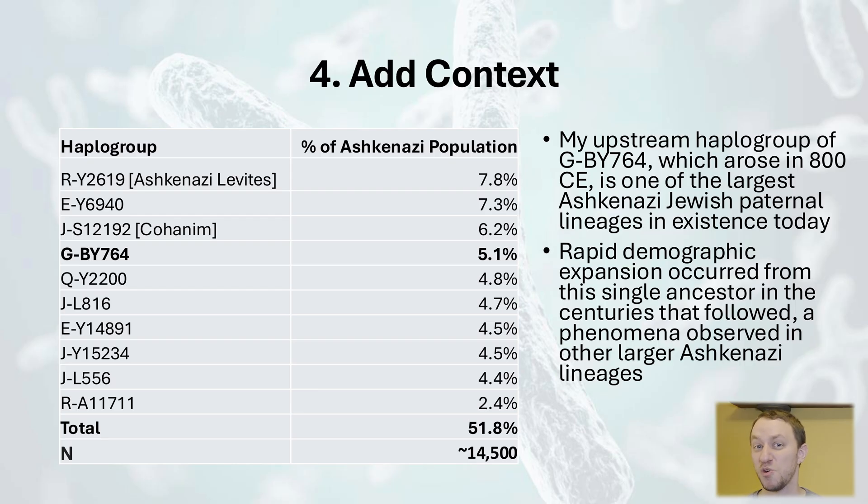We covered a lot of ground in this video. Hopefully you now have a better idea of how to navigate your own Big Y tree. Start with your own branch and your closest matches, and work your way back in time, dating your connections to more distant Big Y matches. And don't forget to layer in additional context so that you can make the most of your results. What has your experience been like using the Big Y Block Tree? I'd love to hear about it in the comments. And if you're enjoying this series, be sure to like and subscribe. Let's keep decoding your Y-DNA together.